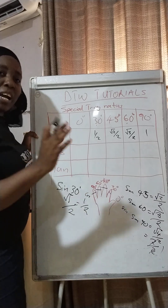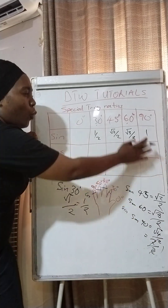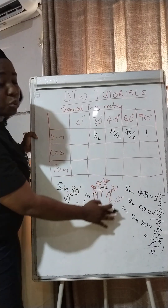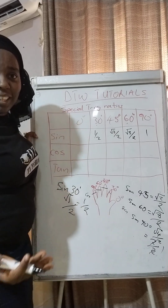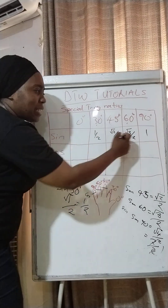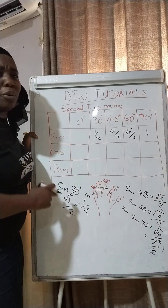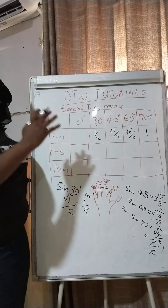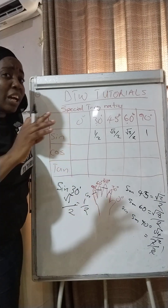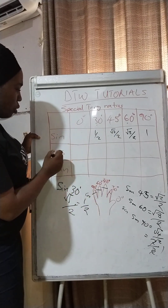I always advise students: immediately when you get into the exam hall, if you're doing physics or maths, on your rough sheet just quickly write out this table. Once you have it in your mind you can do a mental mapping and don't even need to use the hand trick again. The only time you go back to the trick is if you've forgotten a value. Map out your key formulas — your trig ratios are one of them.